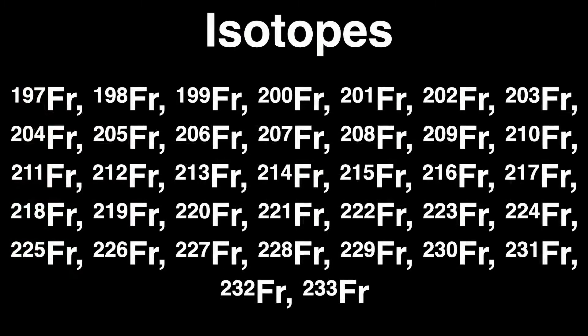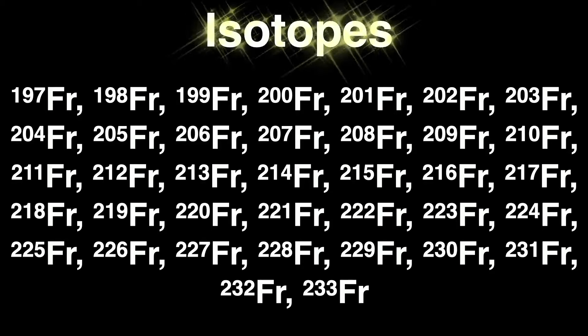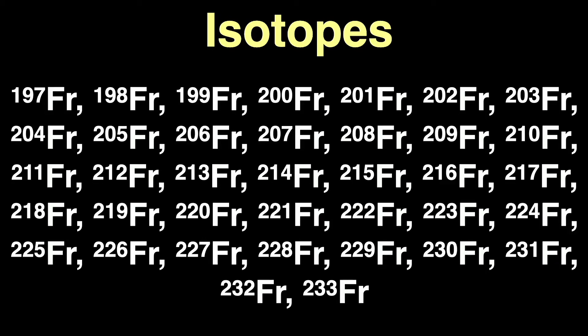Each element has many different forms. For each specific element, the number of protons in the nucleus is the same, 87 protons for francium. But there can be different numbers of neutrons in the nucleus. All these different forms are called isotopes. They're chemically identical to each other, but with slightly different masses.